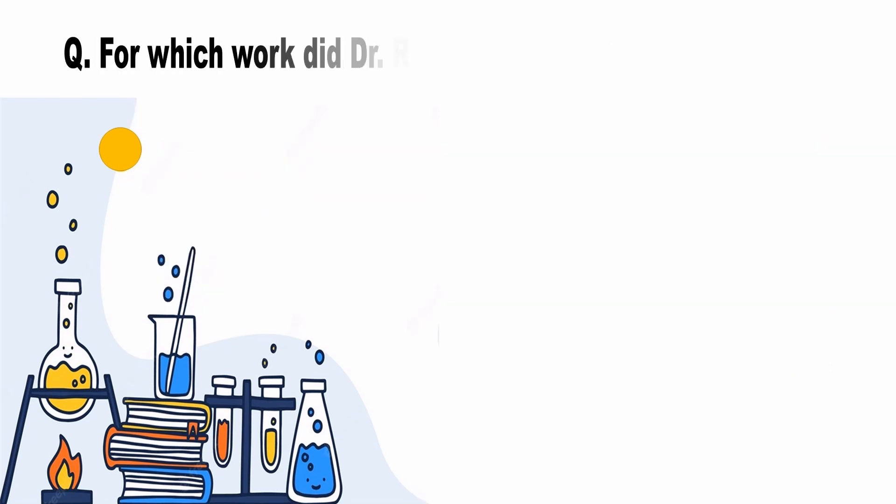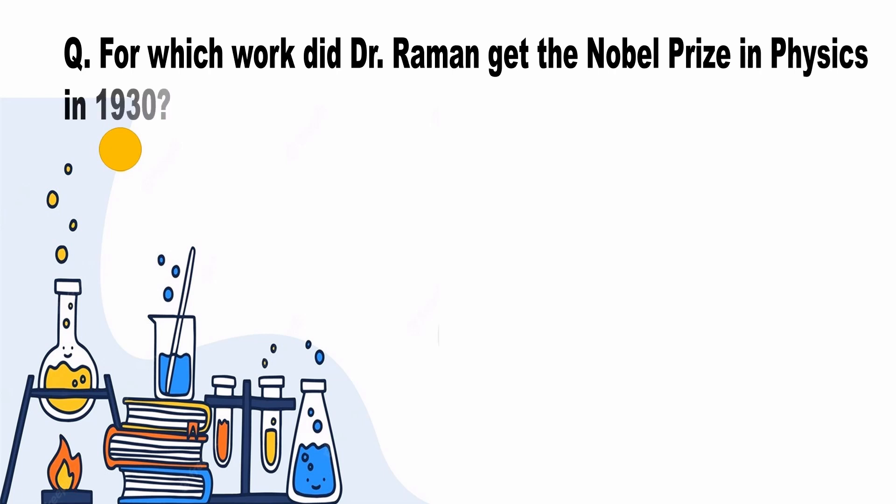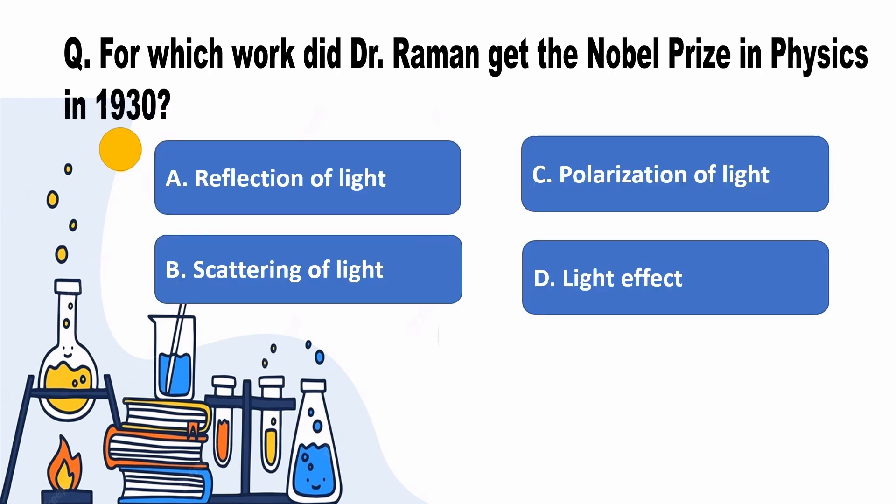For which work did Dr. Raman get the Nobel Prize in Physics in 1930? Answer B, Scattering of Light.